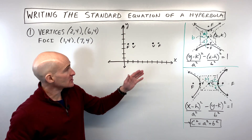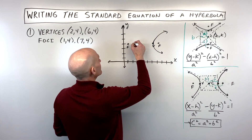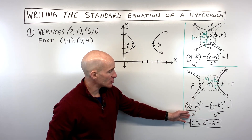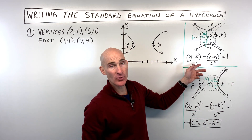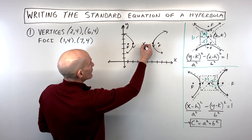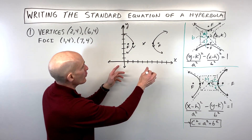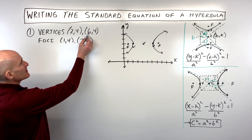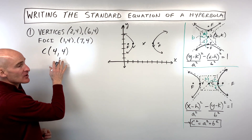Just by graphing these points we can see the hyperbola is going to open to the right and left, so it will be in the form where the x-squared term is the positive term and comes first. If it were opening up and down, the y-squared term would come first. We can find the center halfway between the vertices using the midpoint formula: (2+6)/2 = 4 and (4+4)/2 = 4, so the center is at (4,4).